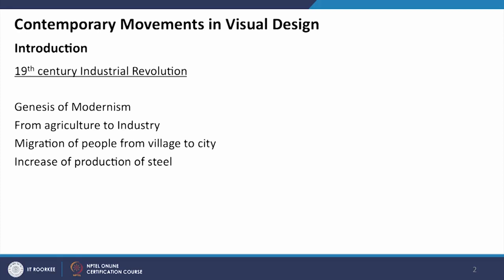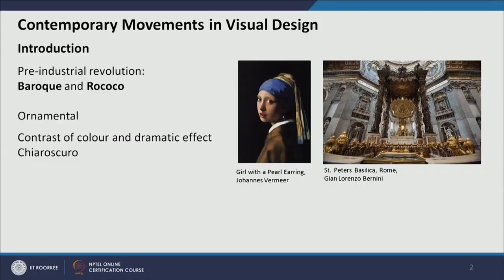We use the terms contemporary art and contemporary design to differentiate this era from the industrial revolution. Industrial revolution, as you may know, happened mostly in Europe and then flourished all over the world. It is a continuation of the renaissance — after renaissance there was a lot of industrialization, people moved from villages to cities, and mass production and a technology boom happened.